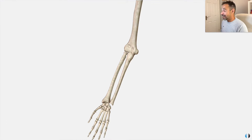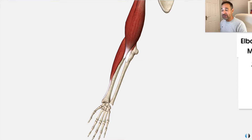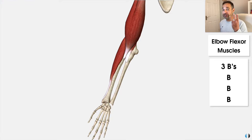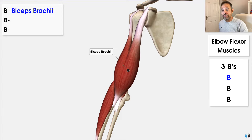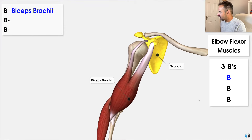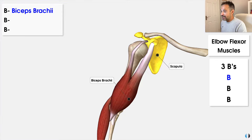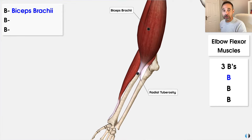Now let's move on to the elbow joint. Next we've got the three B's of elbow flexion, because there are three key elbow flexors and all of them start with the letter B. First, we have the biceps brachii muscle — no doubt the most famous of the three. This muscle has a role in elbow flexion but also has a role in supination of the forearm. It is a two-headed muscle that originates on the scapula: the long head at the supraglenoid tubercle and the short head at the coracoid process, before inserting into the radial tuberosity of the radius.